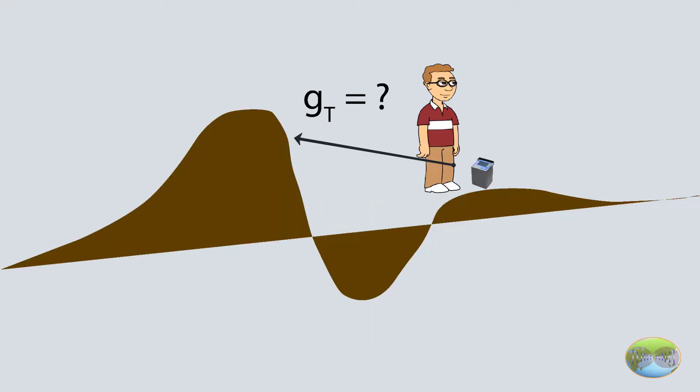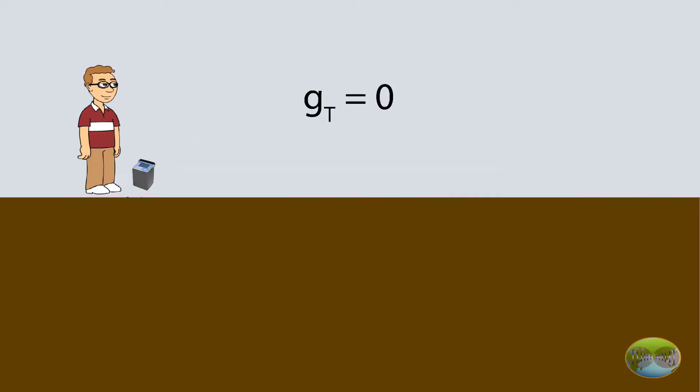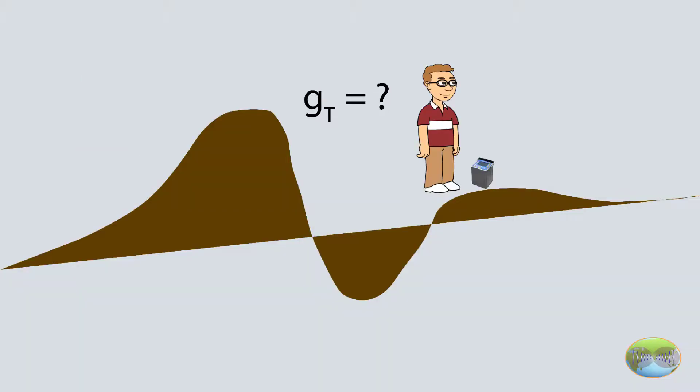The third correction is terrain correction. This correction is applied to nullify the effect due to adjacent terrains. For instance, imagine you are conducting your survey on a flat topography. Then you will not have to apply any terrain correction, as there is no local effect. But sometimes there are undulations which have to be removed by one's experience. There is no absolute mathematical formula for this, but it comes with experience.